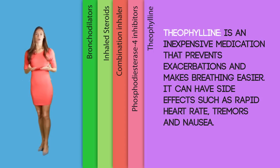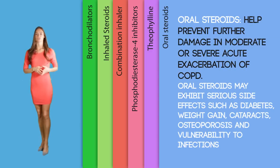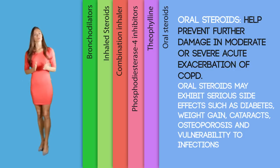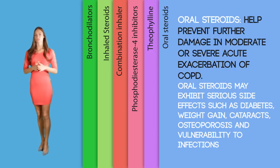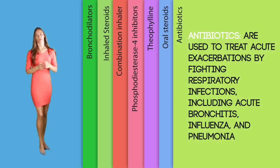Theophylline is an inexpensive medication that prevents exacerbations and makes breathing easier, but it can have side effects such as rapid heart rate, tremors, and nausea. Oral steroids help prevent further damage in moderate or severe acute exacerbations of COPD, though they may exhibit serious side effects such as diabetes, weight gain, cataracts, osteoporosis, and vulnerability to infections. Antibiotics are used to treat acute exacerbations by fighting respiratory infections including acute bronchitis, influenza, and pneumonia, which can otherwise intensify COPD.